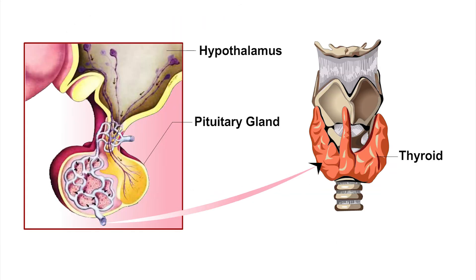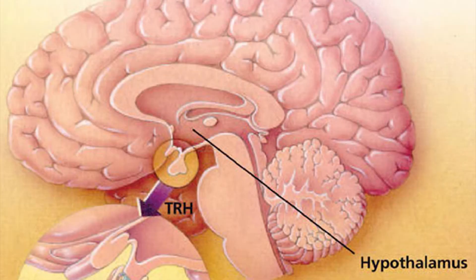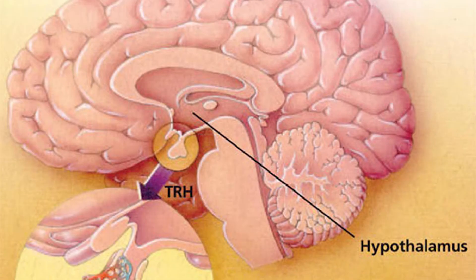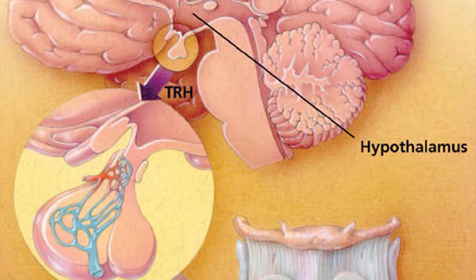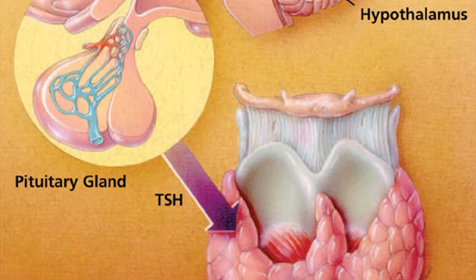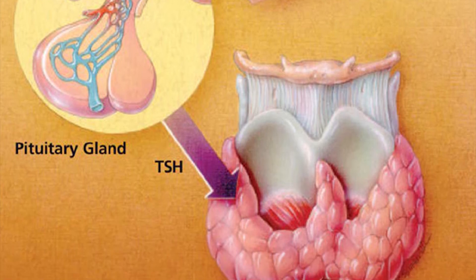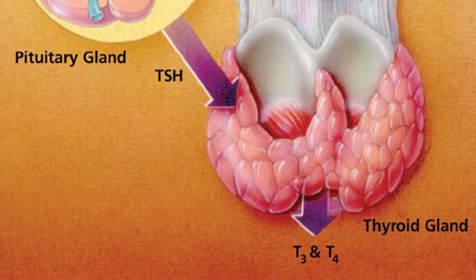There exists a negative feedback mechanism between the circulating level of thyroxine and the hypothalamic releasing factor. When thyroxine is less in blood, the hypothalamus produces more TSH releasing factor, which on reaching the pituitary stimulates the secretion of TSH.